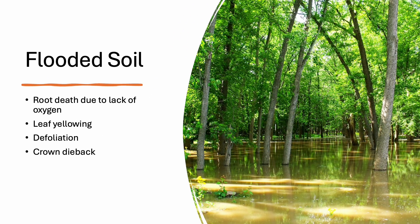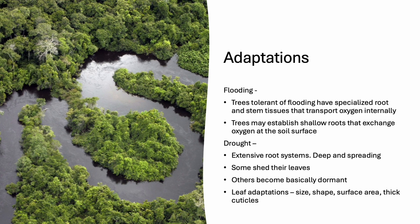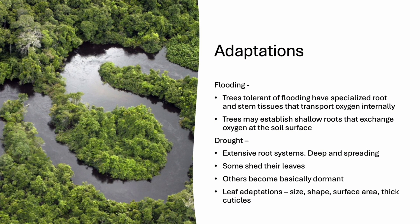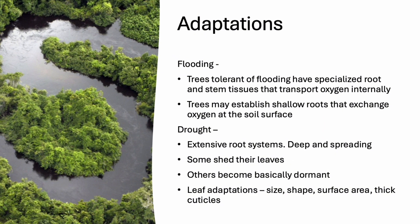At the other extreme is flooded soil. Flooded soil results in root death due to lack of oxygen, leaf yellowing, defoliation, and crown dieback — some of the same symptoms as drought. Trees can adapt to both drought and flooding. During drought, trees may develop extensive root systems, and some species may even shed their leaves or go dormant.